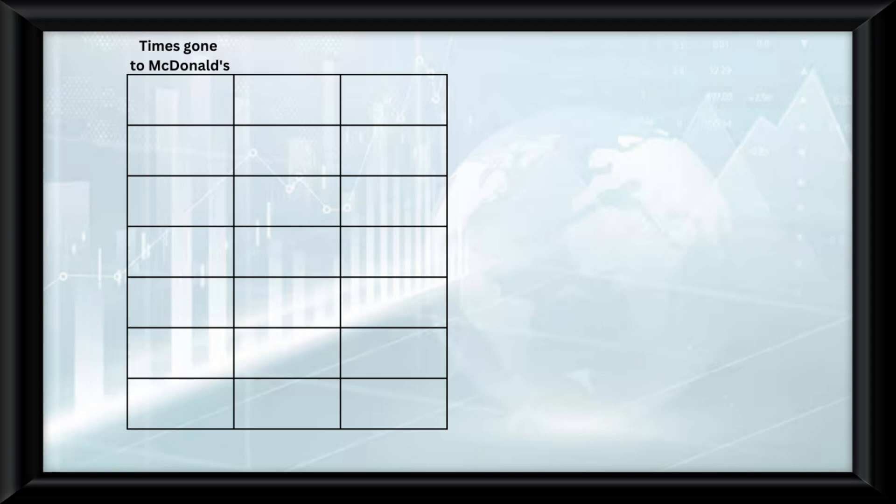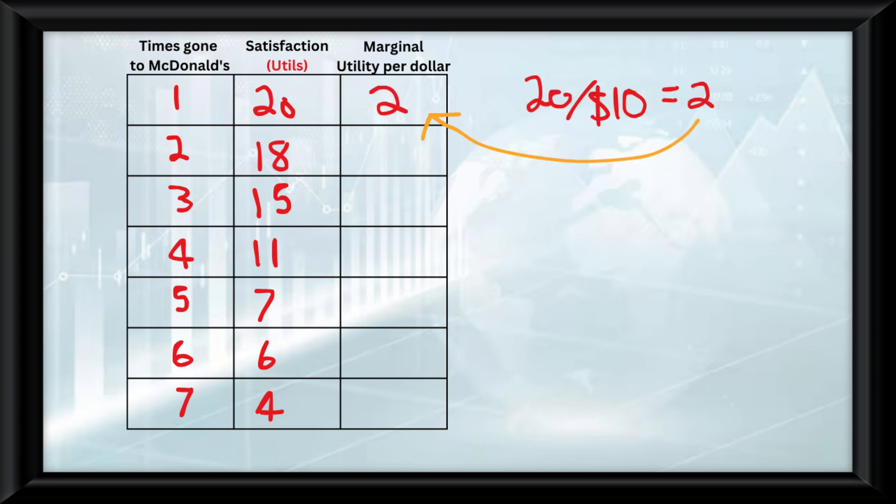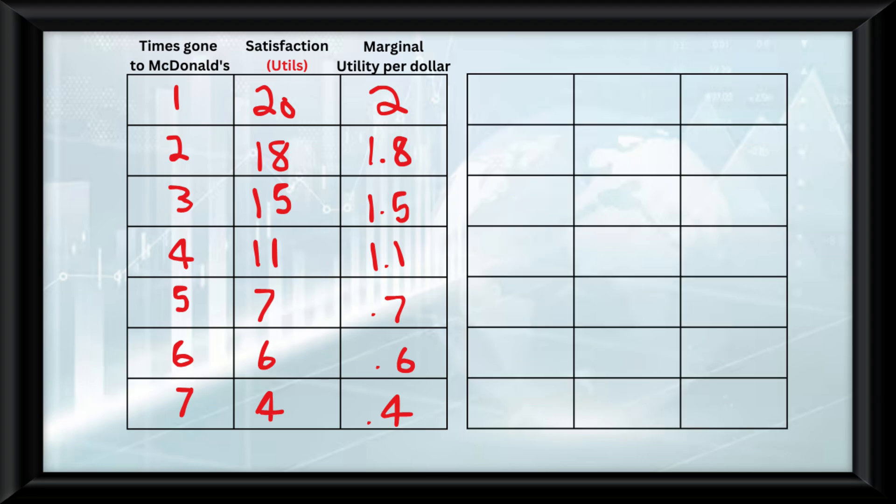Say we go to McDonald's every day for a week and spend $10 each time. For each day, the satisfaction level, measured in utils, will go down. Now you calculate the marginal utility or satisfaction per dollar by doing the marginal utility divided by the price for each one. And then say we have another scenario where we go to Burger King every day for a week and spend $10, and we quantify everything here.